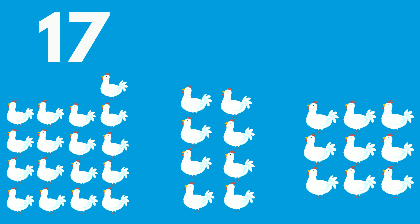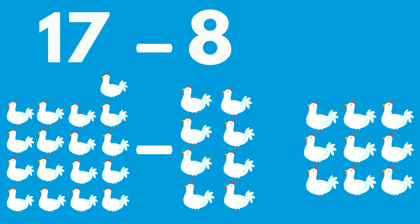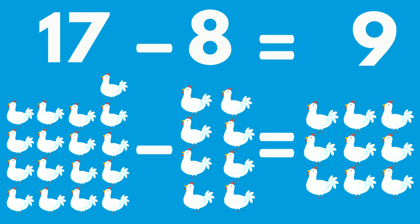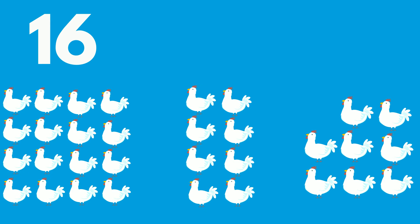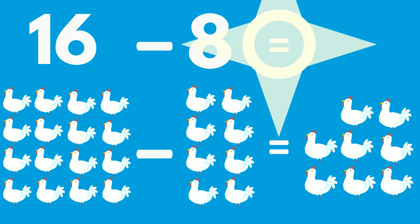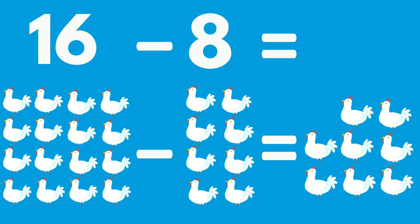17 chickens minus 8 chickens equals 9 chickens. 16 chickens minus 8 chickens equals 8 chickens.